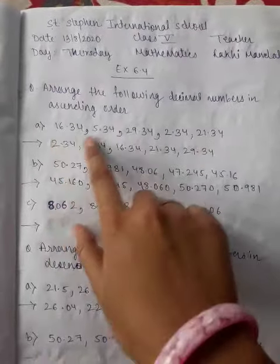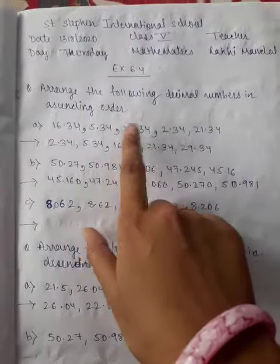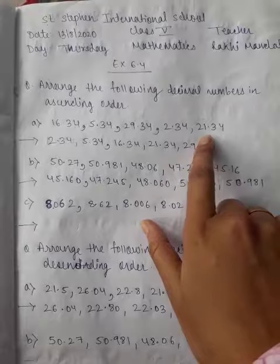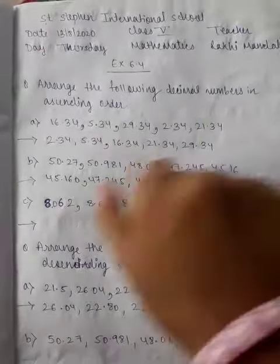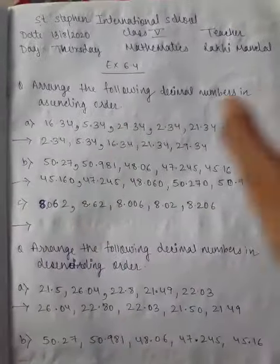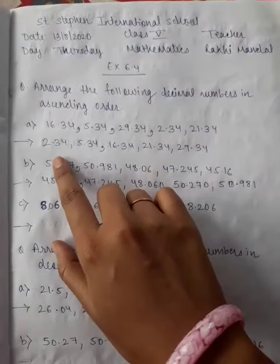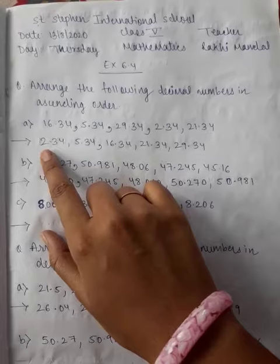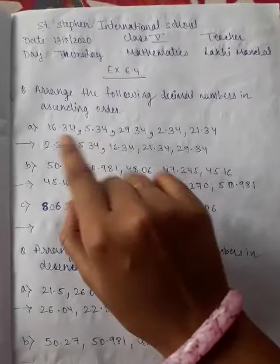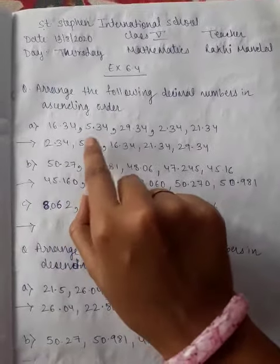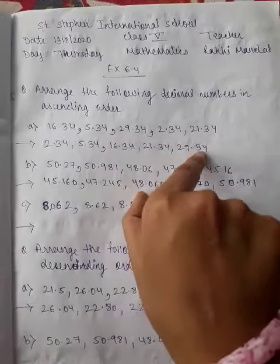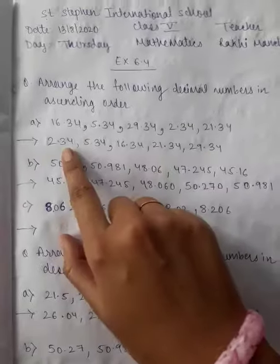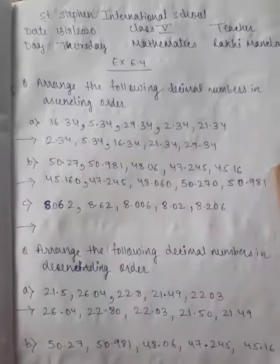First is 16.34, 5.34, 29.34, 2.34, 21.34. All are like fractions, so it's easy to do. The answer is: 2.34, then 5.34, then 16.34, then 21.34, then 29.34. You know what ascending order is? It's small to large.